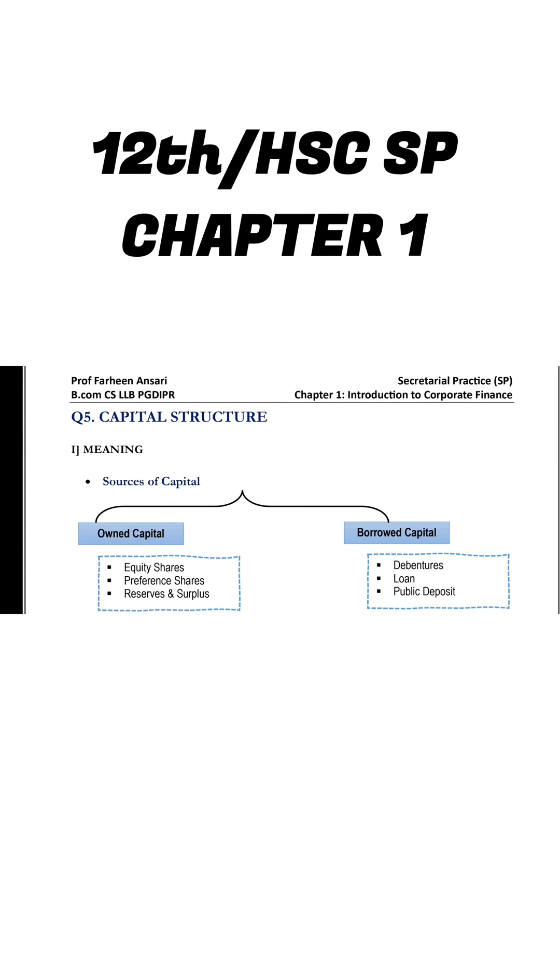So bacho, ab tak hum ne yeh samaj liya hai ki capital kya hota hai? Business mein generally do type ke capital required hota hai. Number one, fixed capital and number two, working capital. And there are several factors joh fixed capital and working capital ke requirement ko affect karte hai.